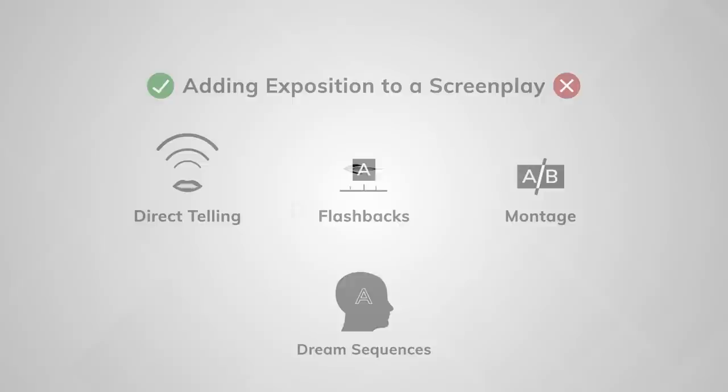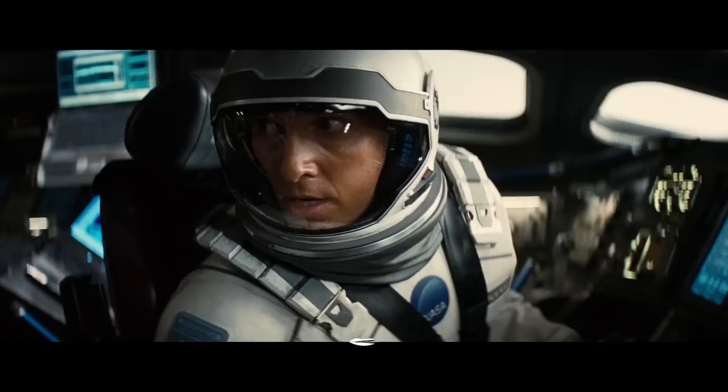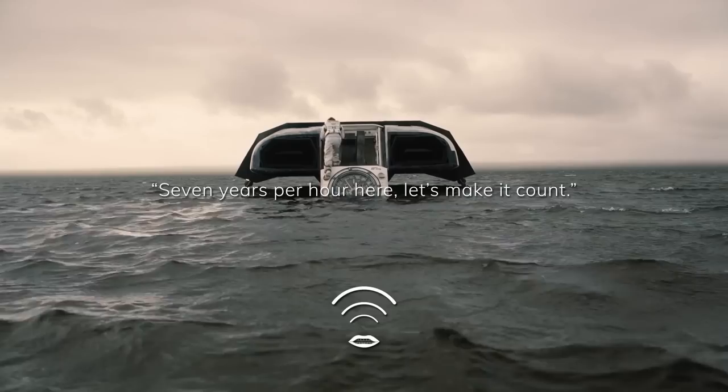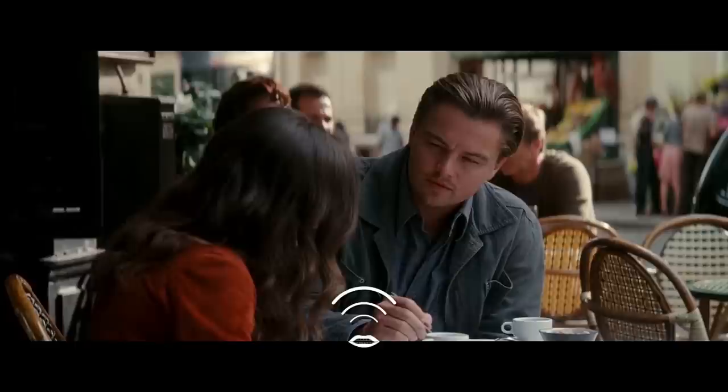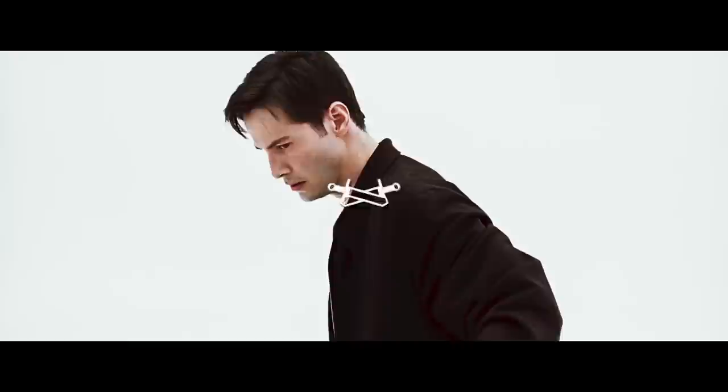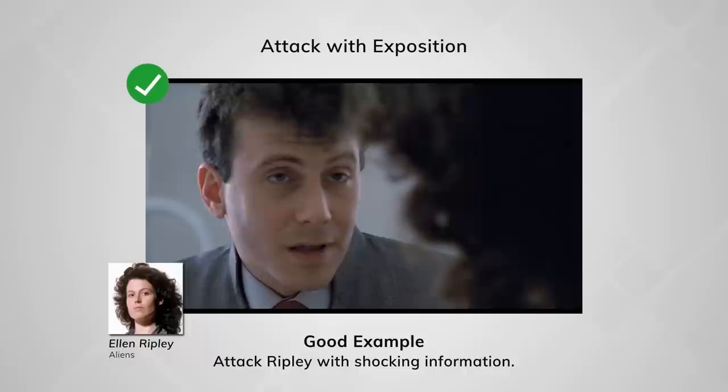One of the most common ways for a character to tell another character information in a film is direct telling — one character simply gives another character important information for the story. This technique is used constantly in films, and like many forms of exposition, it can be used correctly and used terribly. Remember that exposition works best when it attacks the characters and changes their situation. The example from the previous video from the beginning of Aliens is a great example of direct telling exposition used correctly.